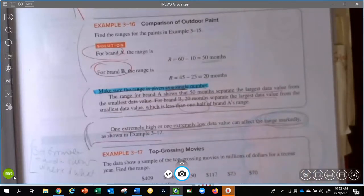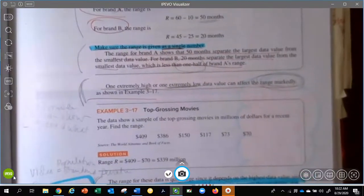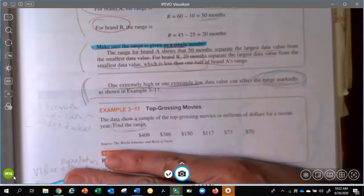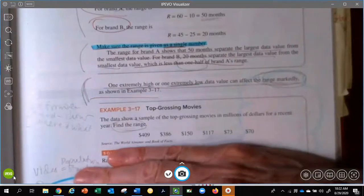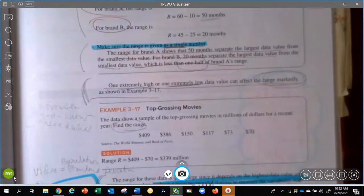One extremely high or one extremely low data value can affect the range markedly. And I would jot that down on my index card. I then am asking you in your notes to do this one on your own, the top grossing movies. So it gives you an example of top grossing new movies. It says find the range. I would cover up the answer. Do this one by yourself and then celebrate. Go back and review. Think about range.